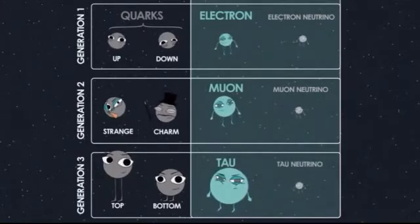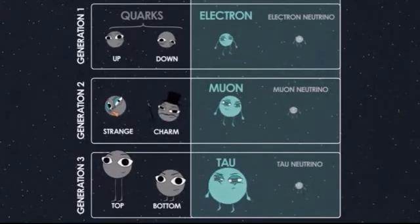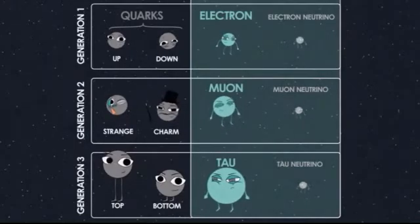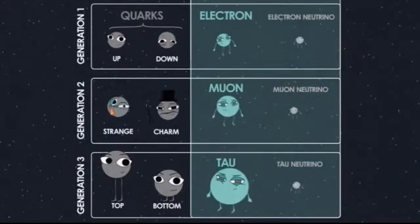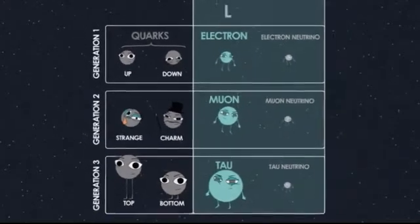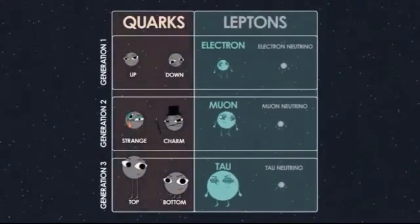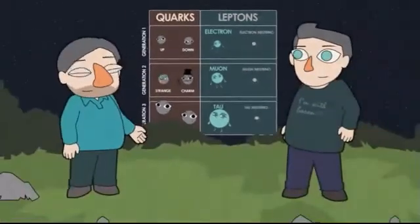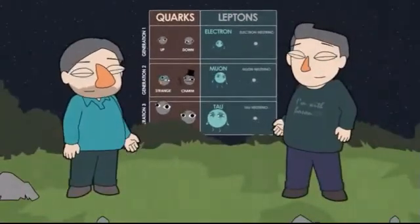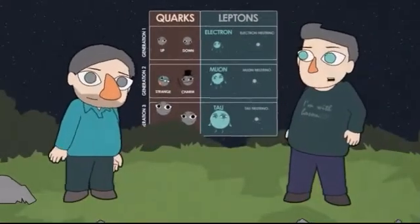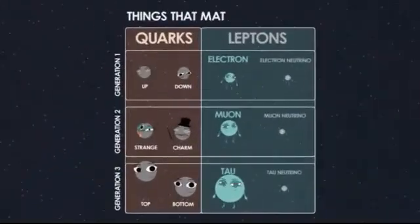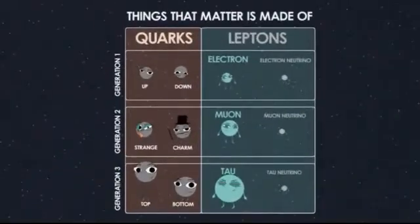So you've got the six quarks, and you've got six of these other things. What are they called? The other things are called leptons. So six quarks and six leptons. Those are the things that matter is made of. But we still have to talk about the things that mediate the forces between matter.